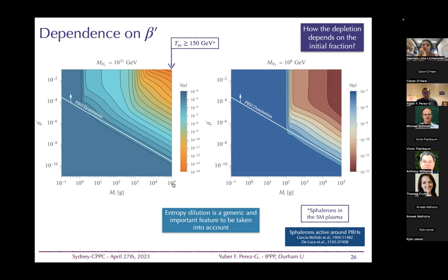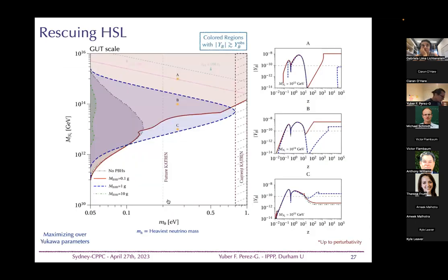We stop at black hole masses of about 10^25 grams because evaporation would occur after sphaleron freeze-out, preventing conversion of lepton asymmetry to baryon asymmetry. However, some people have pointed out that sphalerons may remain active near black holes — this is something we are currently investigating.